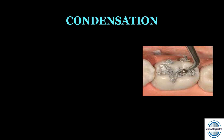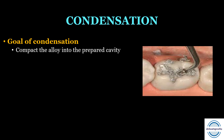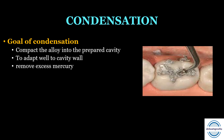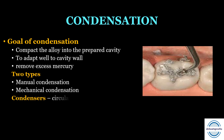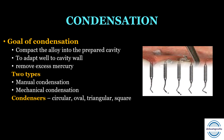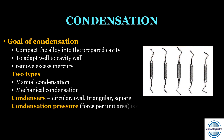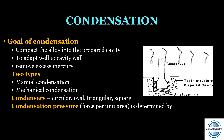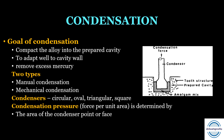The goals of condensation are: to compact the alloy in the prepared cavity to attain the greatest possible density and strength, to adapt it well to the cavity wall, and to remove excess mercury. Condensers can be circular, oval, triangular, or square. The condensation pressure averages three to four pounds and is determined by the area of the condenser face — a smaller condenser applies greater pressure with the same force — and the force exerted by the operator.